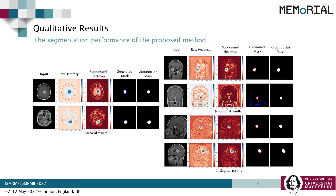Now it's time for qualitative results. Here are a few examples in three different orientations. We can see the inputs, the raw heatmaps, the suppressed heatmaps, and the generated masks, which are the final segmentation outputs, which are then compared against the ground truth masks. By looking at the raw heatmaps, we can understand the network's reasonings and we can clearly see the tumor in every case.